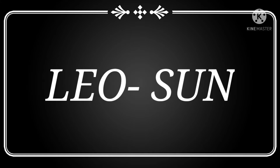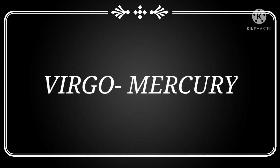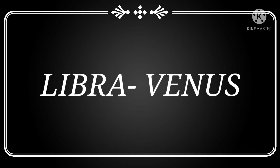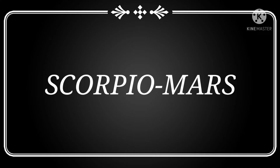Then comes Leo, the ruling planet is Sun. Then Virgo, ruling planet Mercury. Then Libra, ruling planet Venus. Then comes Scorpio, ruling planet of this sign is Mars.